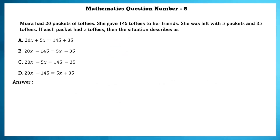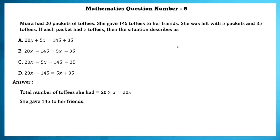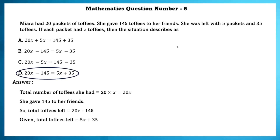Mathematics question number 5. Miara had 20 packets of toffees. She gave 145 toffees to her friends and was left with 5 packets and 35 toffees. If each packet had X toffees, the total toffees she had is 20X. After giving away 145, total toffees left = 20X − 145. Given total toffees left = 5X + 35, we get 20X − 145 = 5X + 35. That is option D.